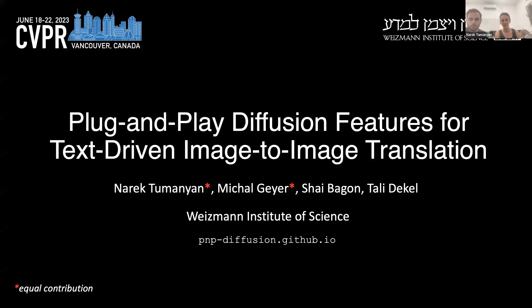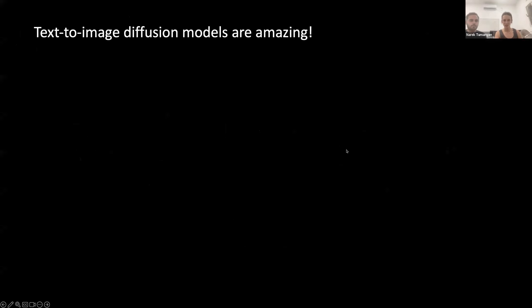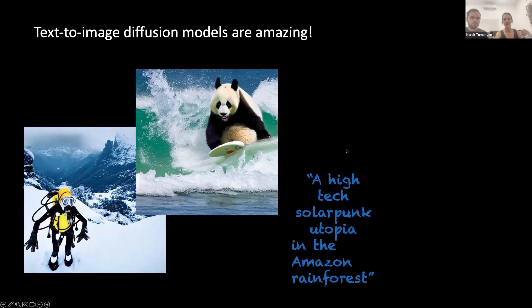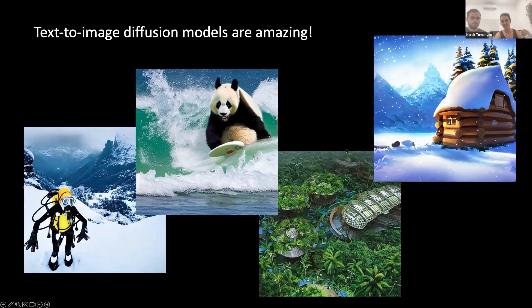Our work is called Plug and Play Diffusion Features for Text-Driven Image-to-Image Translation. Our starting point is that text-image diffusion models are incredible. They generate beautiful photos given arbitrary prompts like a panda surfing, but they do have one limitation which is limited user controllability.